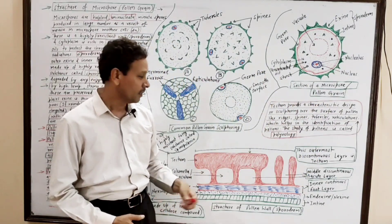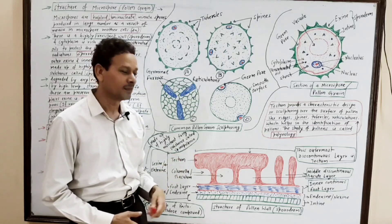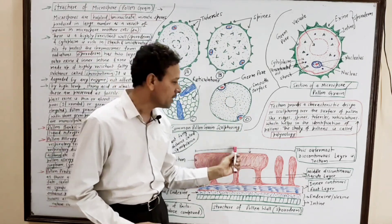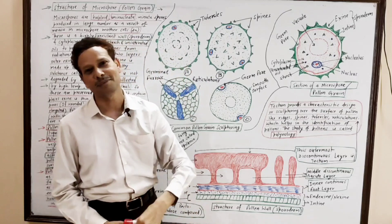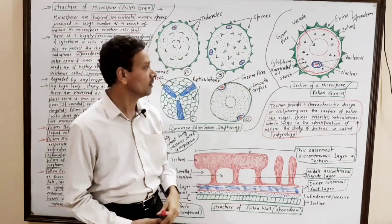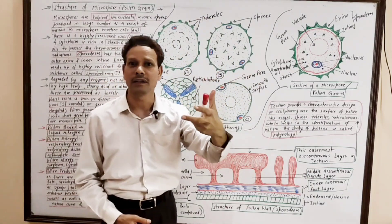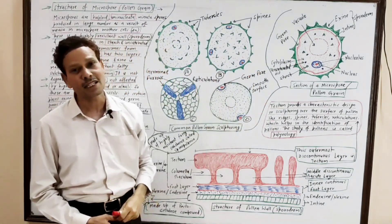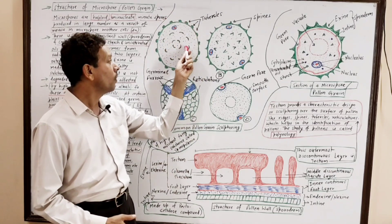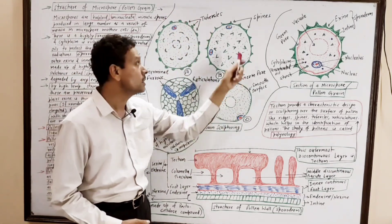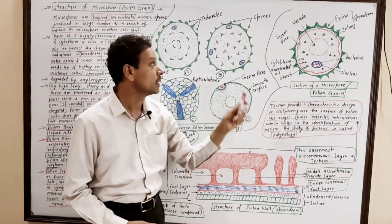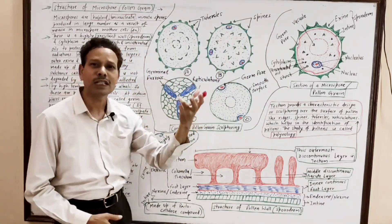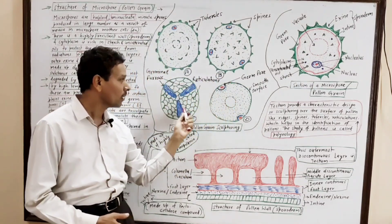The outermost layer of the exine is the tectum, which is a discontinuous layer. The tectum provides characteristic sculpturing over the surface of the microspore. That sculpturing may be in the form of small rounded structures called tubercles, fine needle-like structures called spines, or the surface may be smooth, or it may possess a network-like reticulation.